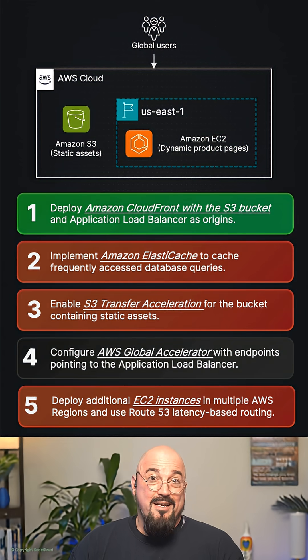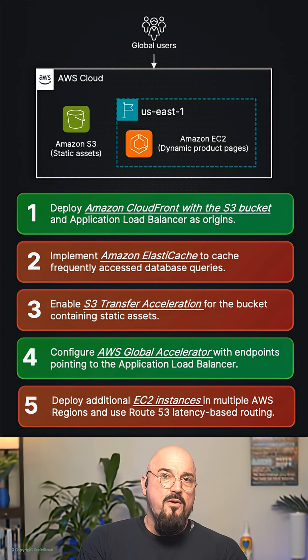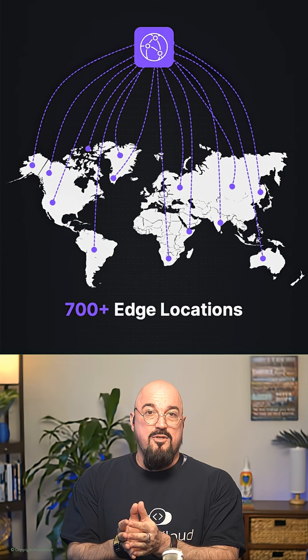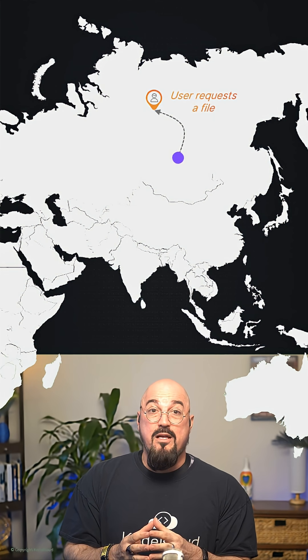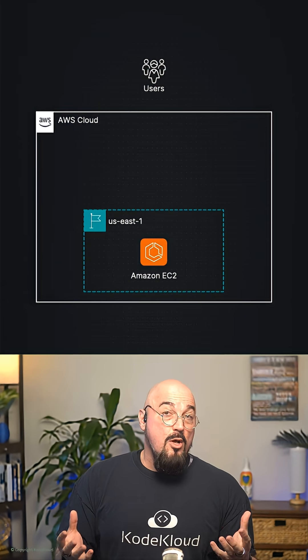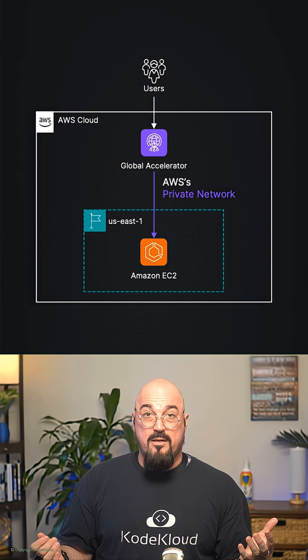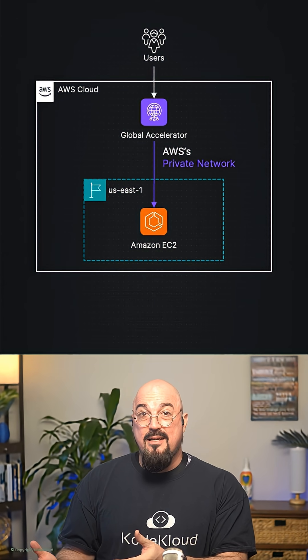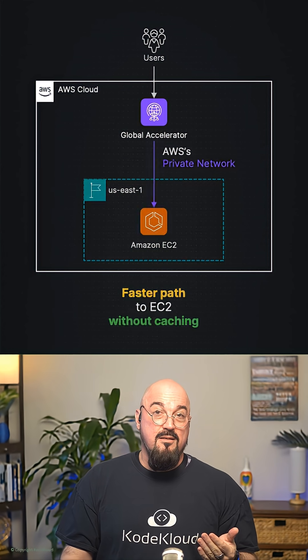The correct answers are CloudFront and Global Accelerator. CloudFront will cache static content at 700 edge locations — it matches the static assets hint, and users get images from the nearest edge available globally. Global Accelerator routes traffic over AWS's private network, it matches the dynamic content hint, and it's a faster path to EC2 without caching.